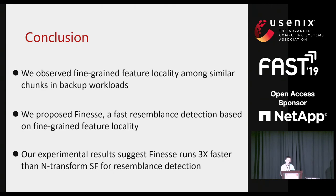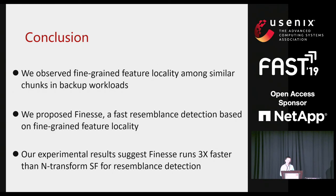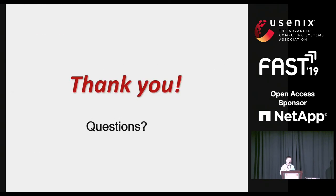In conclusion, we observe fine-grained feature locality among similar chunks in backup storage workloads, and we propose PHILESS: a faster resemblance detection method based on fine-grained feature locality. We verified this locality on six datasets. Experimental results suggest that PHILESS runs three times faster than n-transform super features for resemblance detection. In a data reduction system combining deduplication and compression, the PHILESS-based system also runs over 40% faster in system throughput than the traditional super feature-based approach. Thank you for your attention.